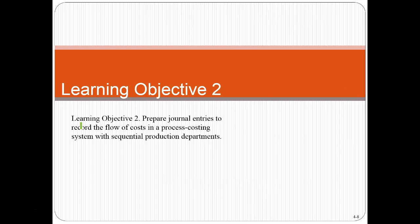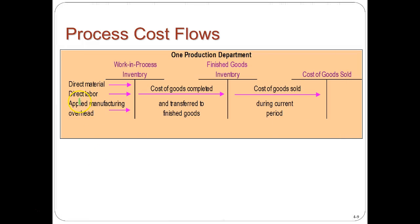Learning objective number two: prepare journal entries to record the flow of costs in a process cost system with sequential production departments. We have our familiar T-account screen here — debits on the left, credits on the right. When we make stuff, costs flow from raw materials to work in process to finished goods, and then we sell to the customer.